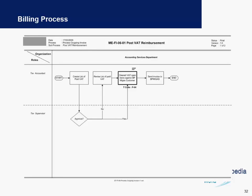You also have the tax accountant, who is responsible for creating a list of paid VAT and revising these lists if required. Finally, they will clear the VAT open items and send the invoice to the respective parties. A supervisor will also be needed to approve this in the system.